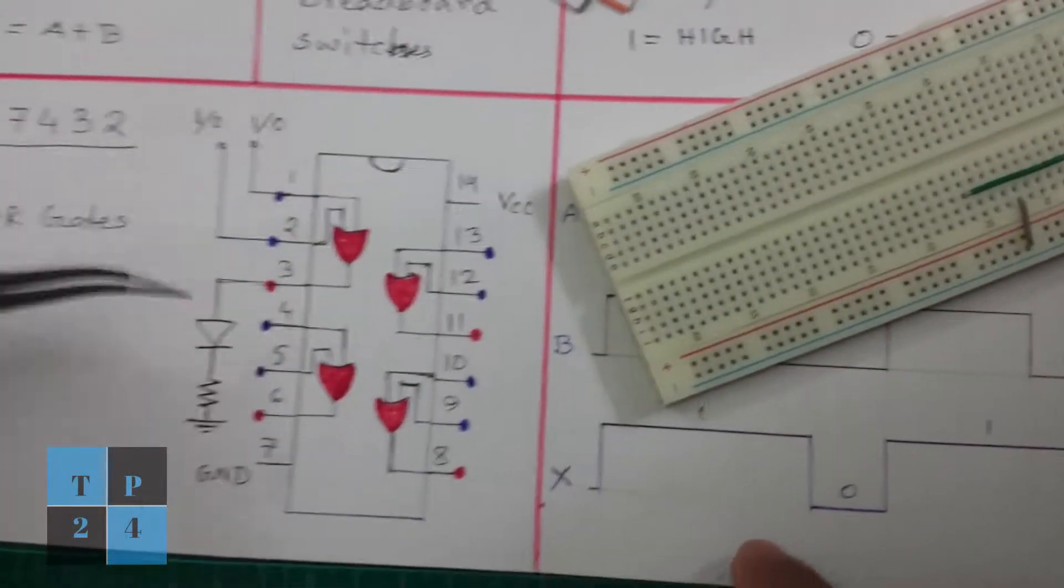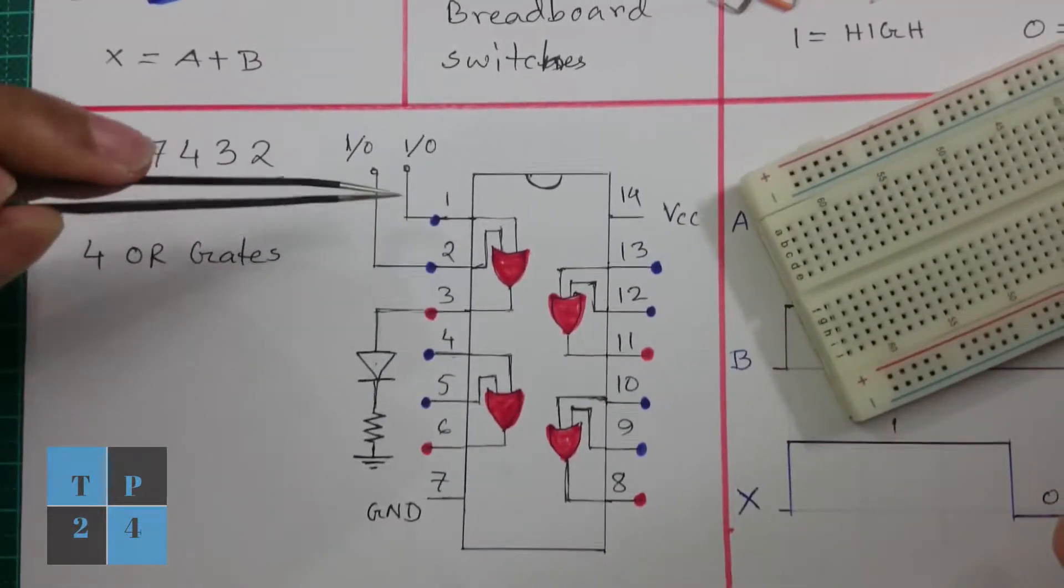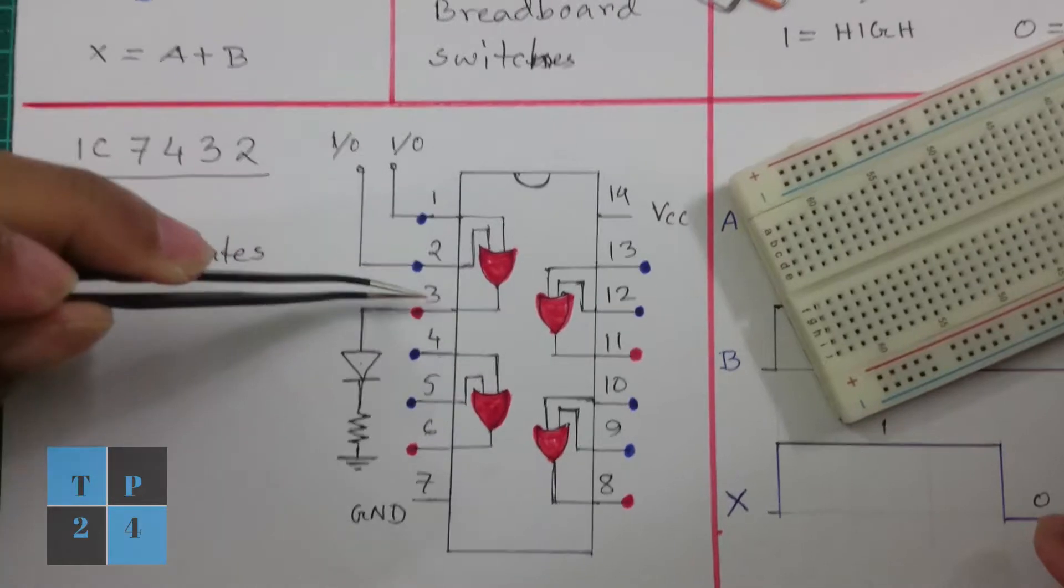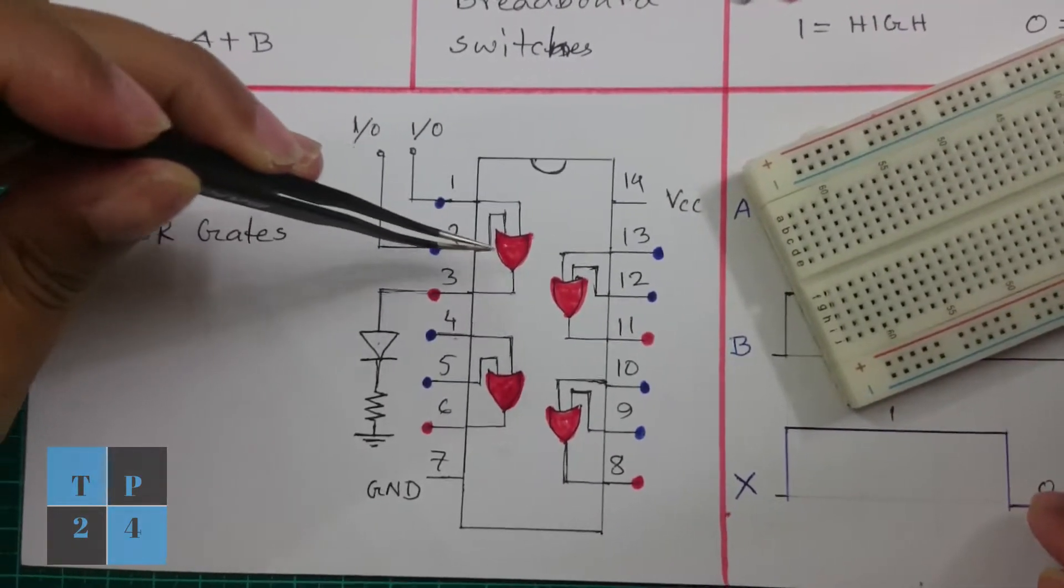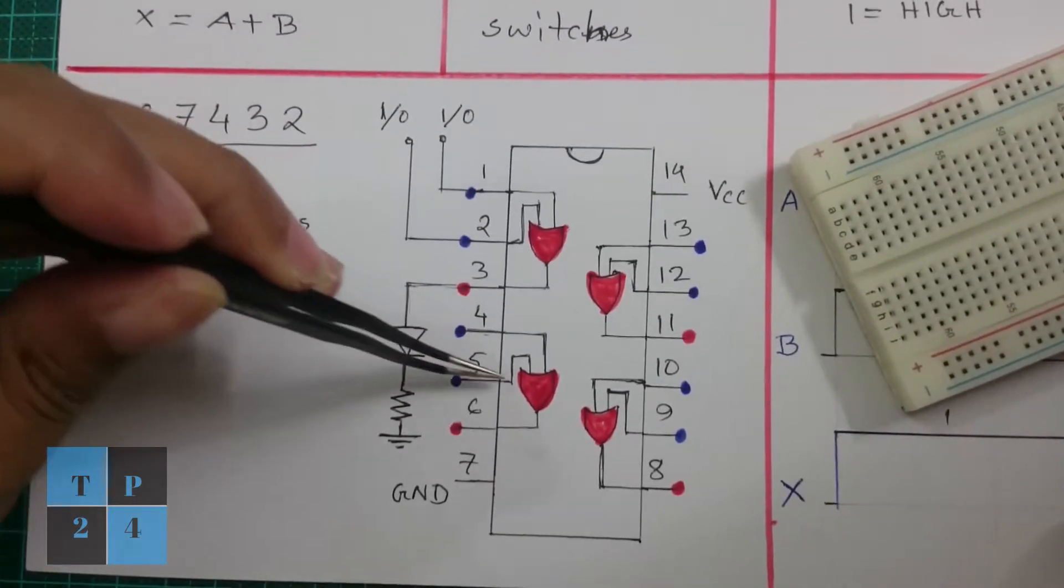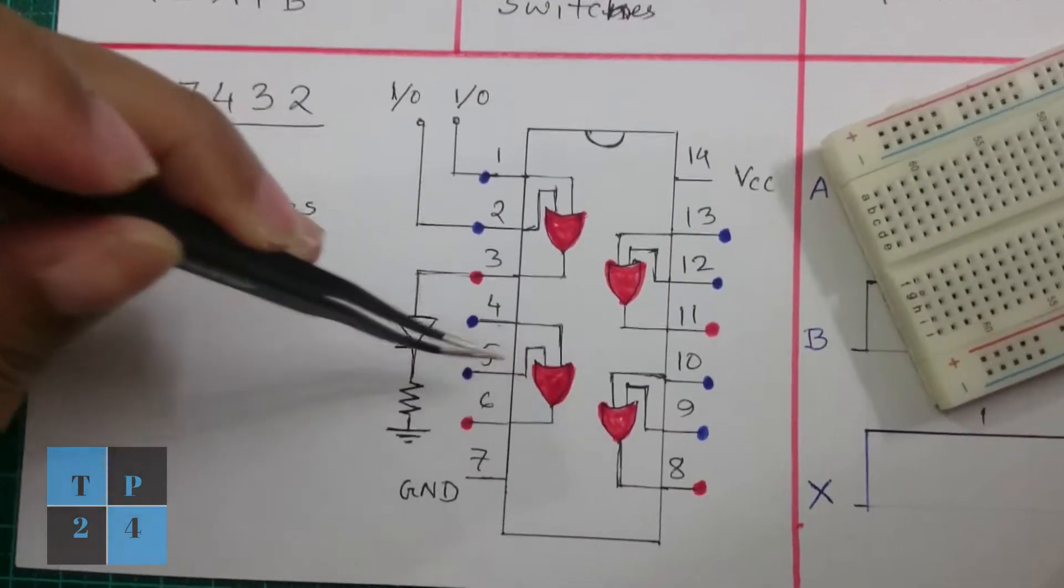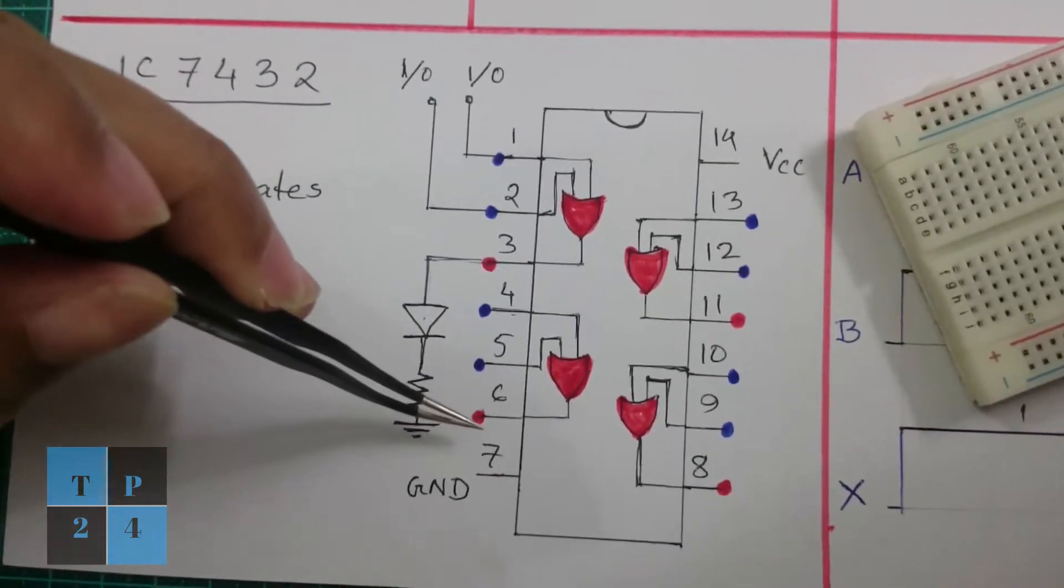So if I plan the pin diagram of the IC, here we can see pins 1, 2, and 3 are the input and output pins of the first OR gate. And here pins 4 and 5 are the inputs of the second OR gate, and pin 6 is the output of this OR gate.